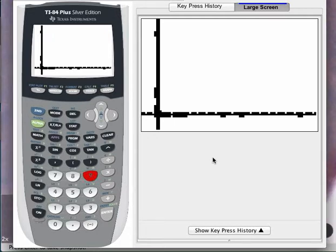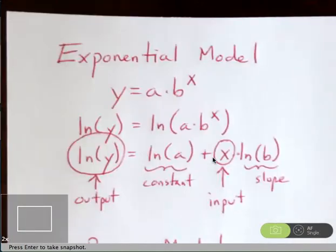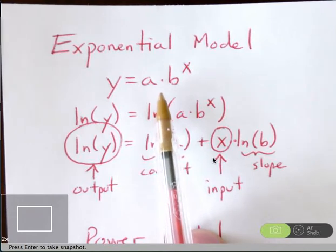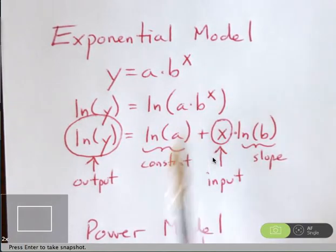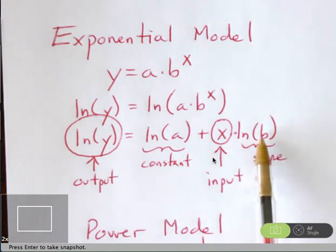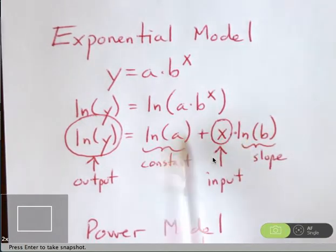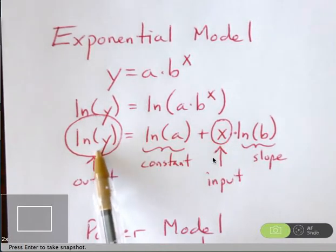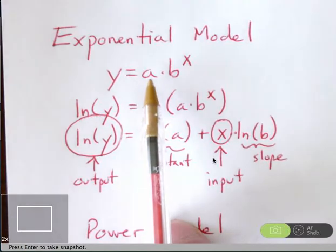That means it is time to consider either an exponential model or a power model. For an exponential model, starting with y equals a times b to the power x, if I take the natural log of both sides, the right side becomes a constant plus x times the natural log of b. So this is a linear model using plain x as input and natural log of y as output. If graphing x against the natural log of y demonstrates a linear pattern, that suggests an exponential model is appropriate.